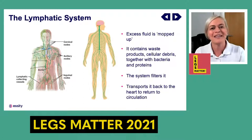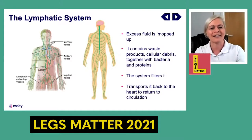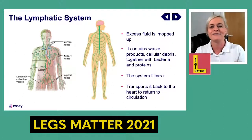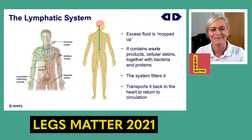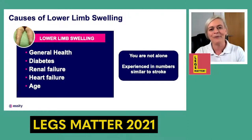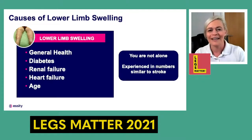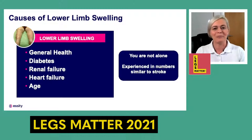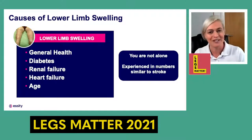There's another system within our body — the lymphatic system — which I like to think of as a mopping system. It mops up all that excess fluid in the cell spaces in our lower legs and ultimately transports, filters, and returns it back to the heart through the lymphatics. The problem when we have lower limb swelling is that the lymphatic system is overloaded and overworked, which can happen due to general health, well-being, diabetes, renal failure, heart failure, or age.